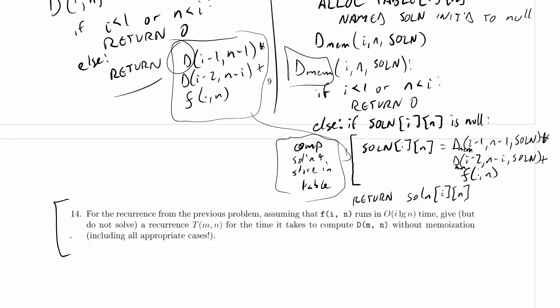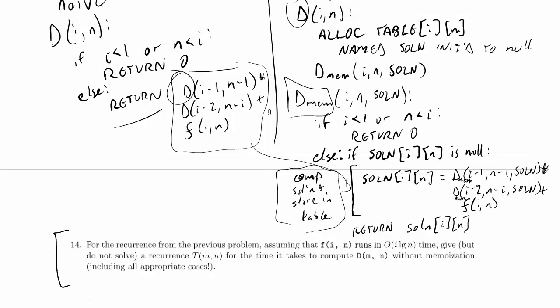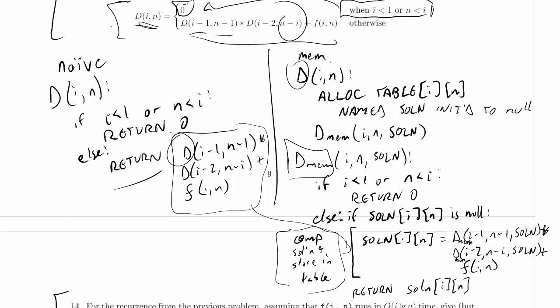So we're looking at a naive implementation of the recurrence up here and we are analyzing how long it runs given that we know a bound on how long f runs. Since it's a big O bound, we're clearly going to have to give a big O bound on the runtime of the whole recurrence because we're going to be running this as an element of the overall recurrence which means we can't give anything better than a big O bound. We don't know anything lower bounding the runtime of f(i,n) except that it runs in at least constant time.